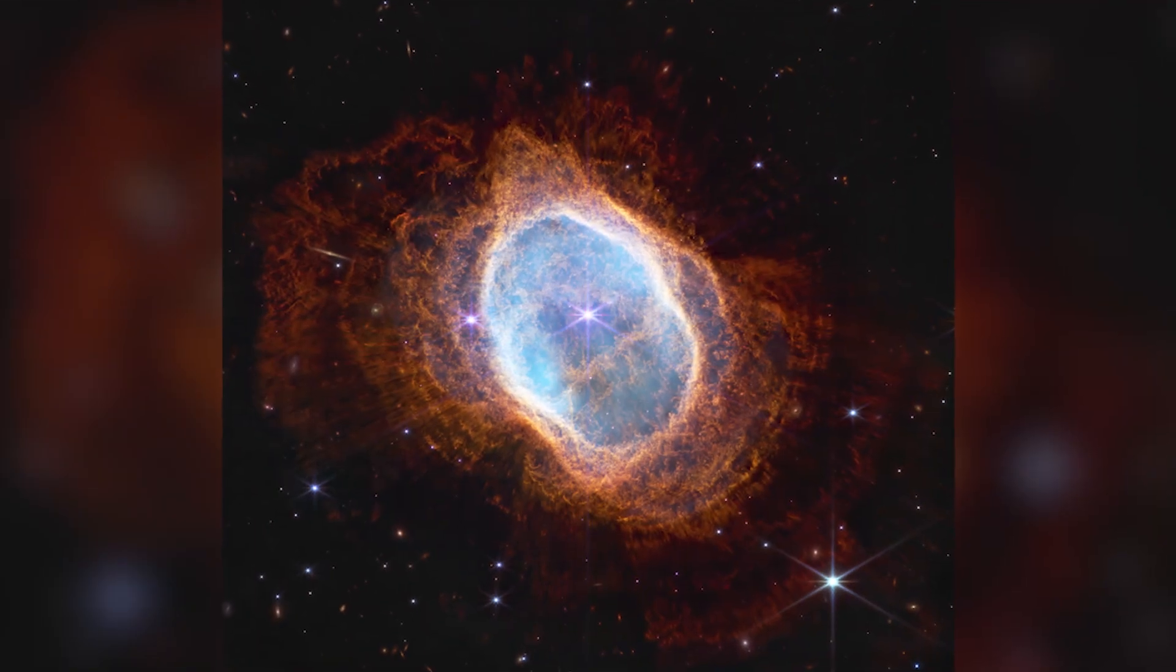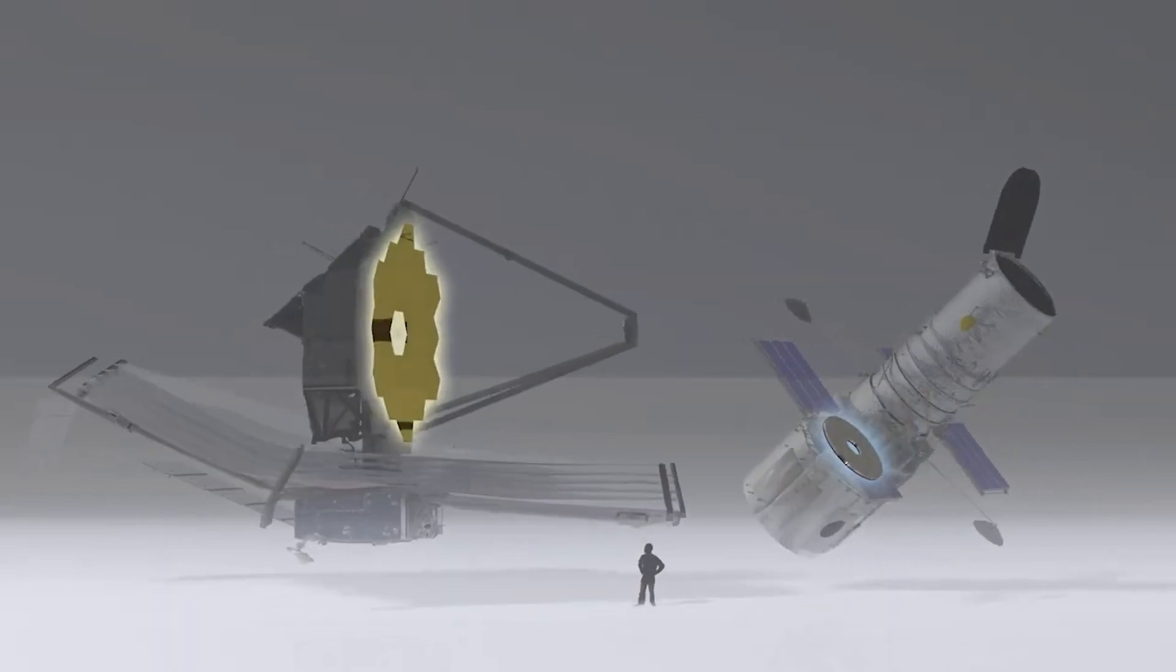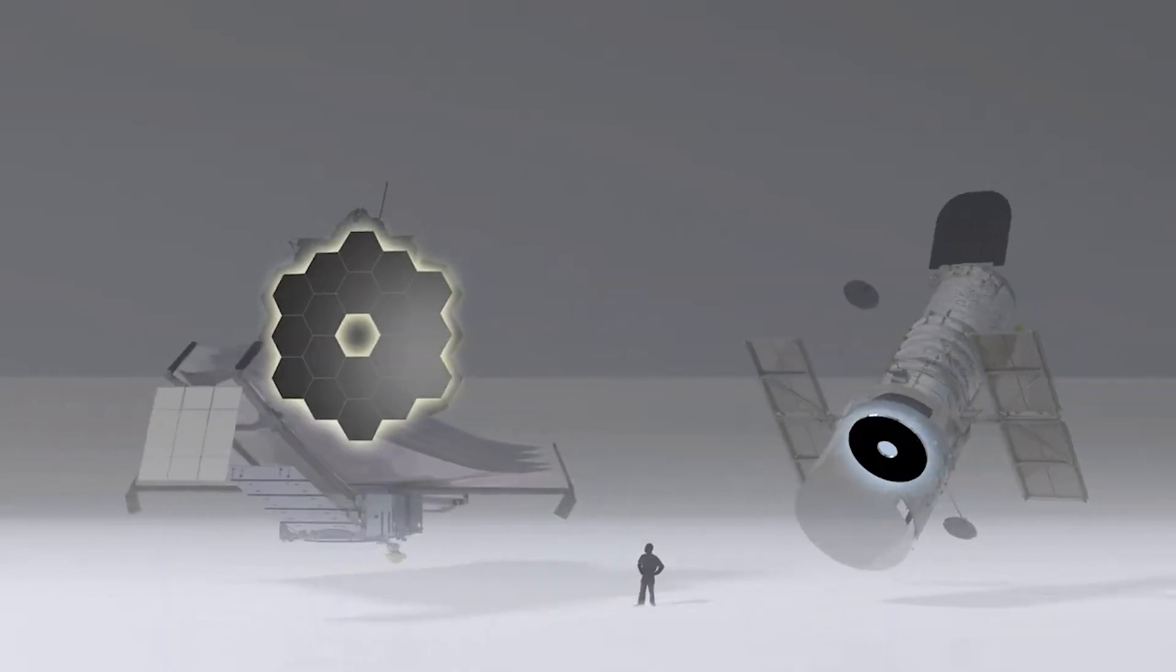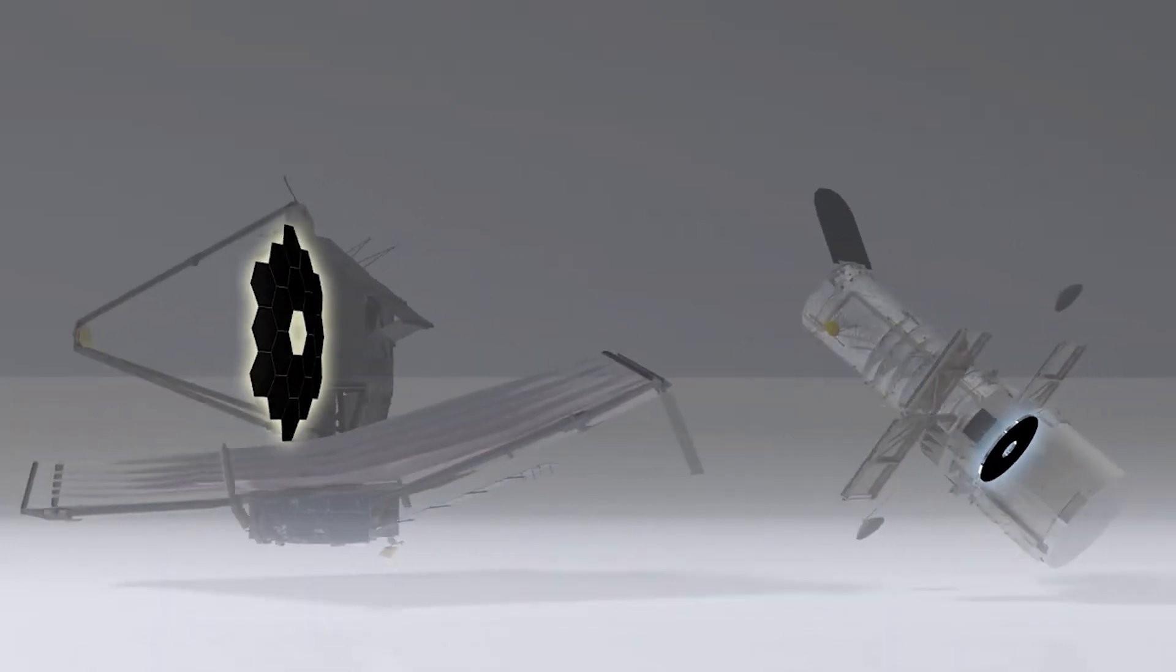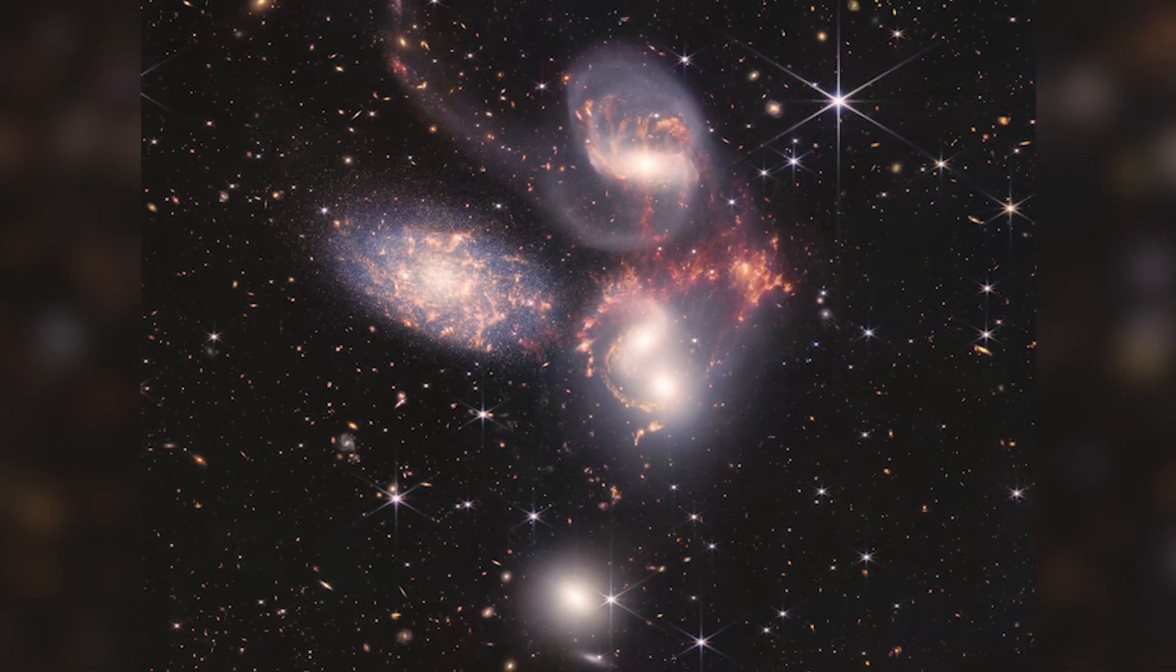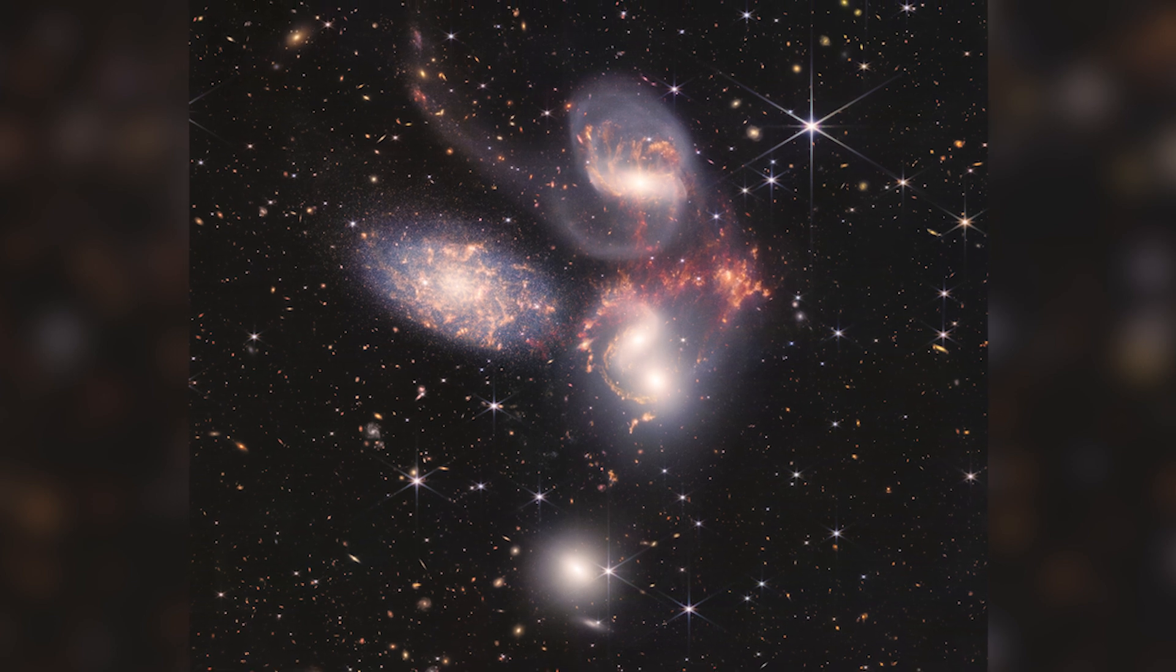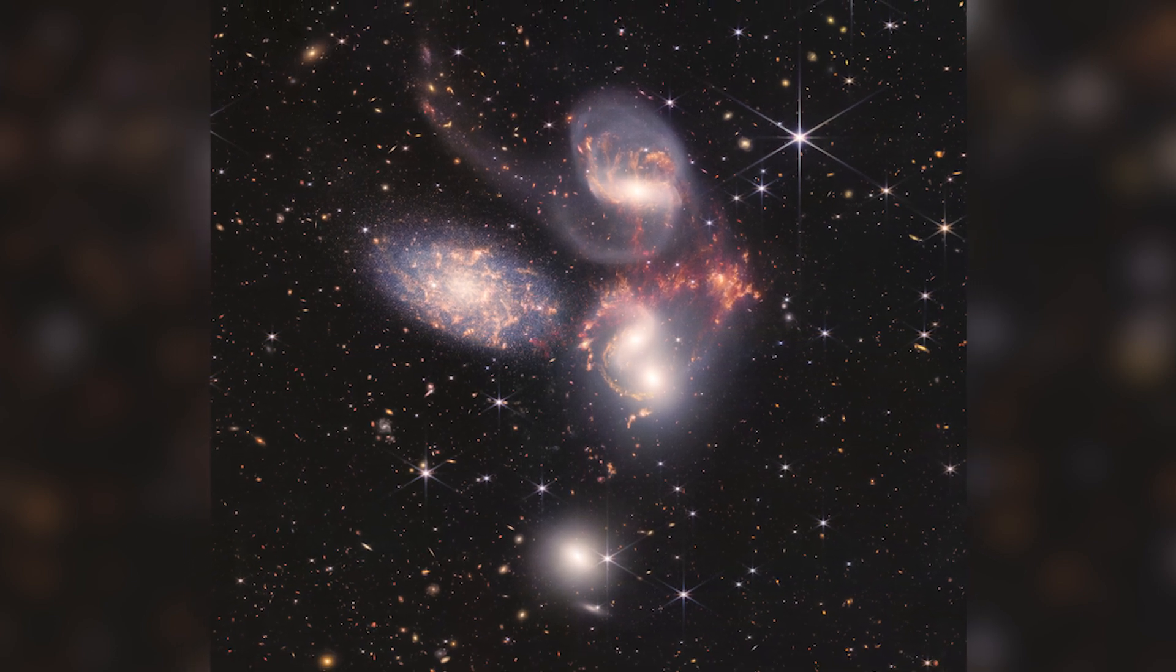These distant galaxies come into view through the remnants of their emitted light. Telescopes act as cosmic time machines, capturing this ancient light and transporting us back in time. Through this cosmic lens, we gain vivid glimpses of the universe's infancy, witnessing its primordial state billions of years ago.